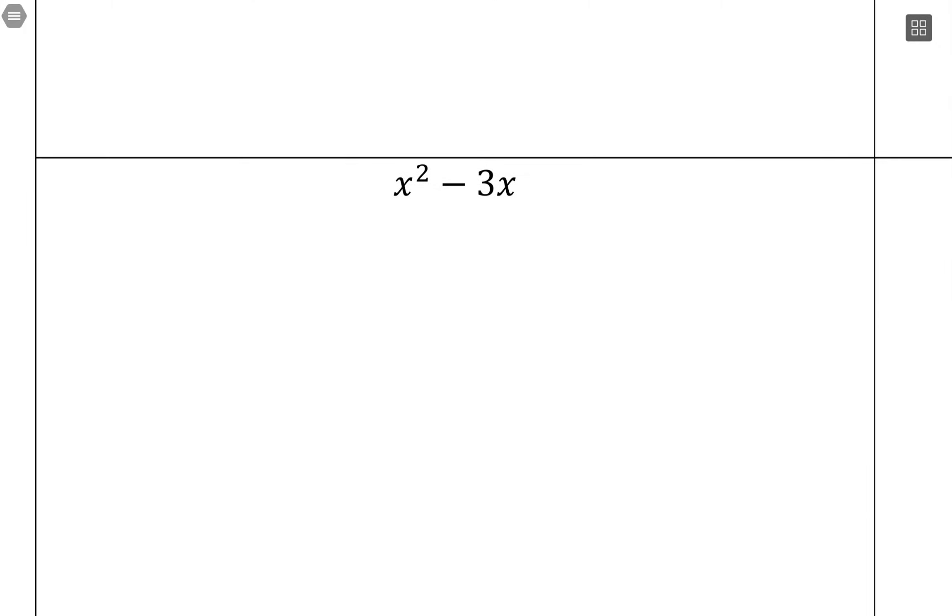If we had x squared minus 3x, this is a case where there's a common factor. So there's a common factor of x. So I'm going to factor out x to the front. And inside, I would have x squared divided by x is just x minus 3x divided by x, which is 3. And that would be all done.